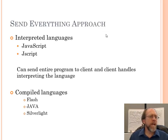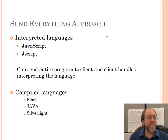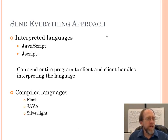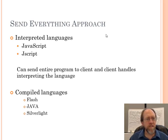Let's look at the send-everything approach. Some people say Java is a compiled language, some say it's interpreted — in some cases it is, in some cases it isn't, but if you have a pre-compiled language I still consider it compiled. Then you have interpreted languages — JavaScript being probably the biggest example of an interpreted language. In JavaScript, I send the code to the client.